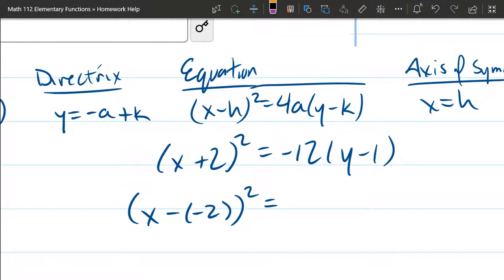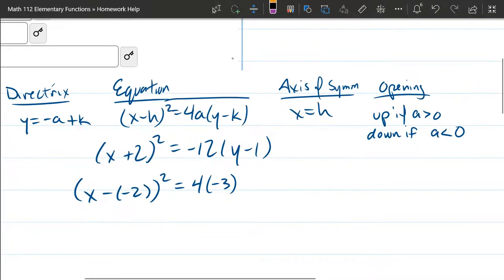The other thing we need to do, I see a negative 12, but I need to have 4 times a number. So what I'm going to do is factor a 4 out of negative 12, and what we're left with is negative 3. If that's tricky to see, just think negative 12 is 4a, and I want to solve for a, so I divide both sides by 4, and I got negative 3 is a.